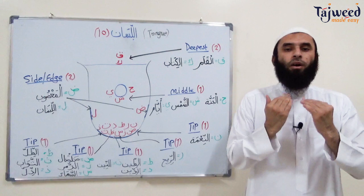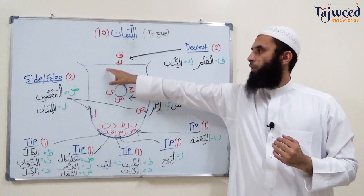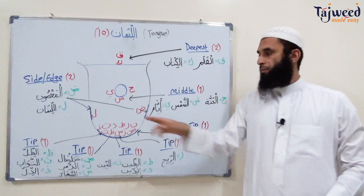So Qaf is a heavy letter — qa, al-qalam. Just beneath that is Kaf, which is like a K in English, as in al-kitab. So two letters with two different makhraj points at the back of the tongue.